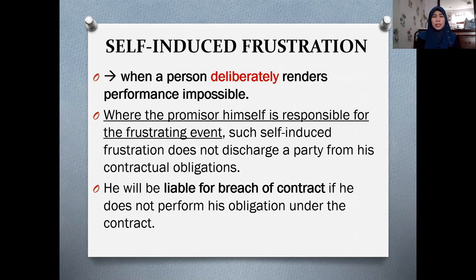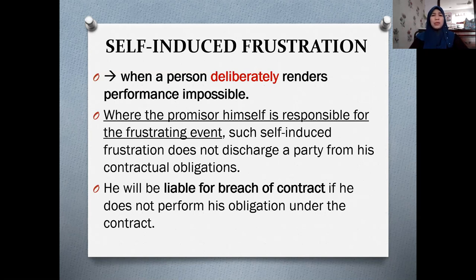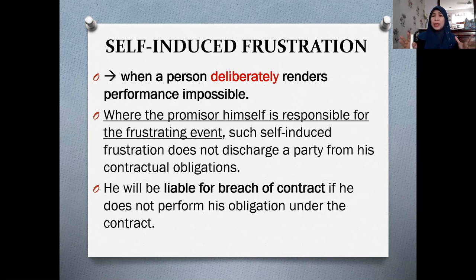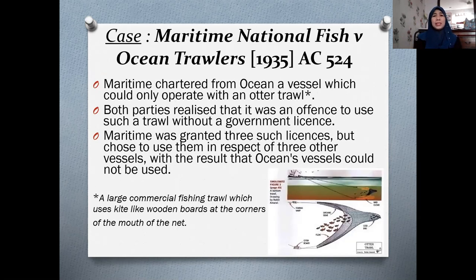Another sub-topic is self-induced frustration — what if frustration is self-induced by one of the contracting parties, especially the one claiming frustration? This happens when a contracting party deliberately and intentionally renders performance impossible — they are the one who caused the frustrating event. Where the promisor is responsible for the frustrating event, such self-induced frustration does not discharge that party from contractual obligations. Instead, they will be liable for breach of contract. They cannot escape their obligations by claiming frustration, since the principle requires that frustration cannot be the fault of either party.